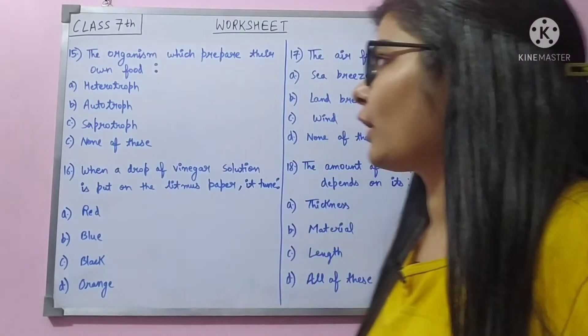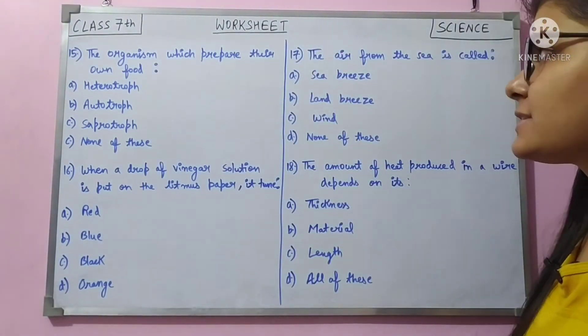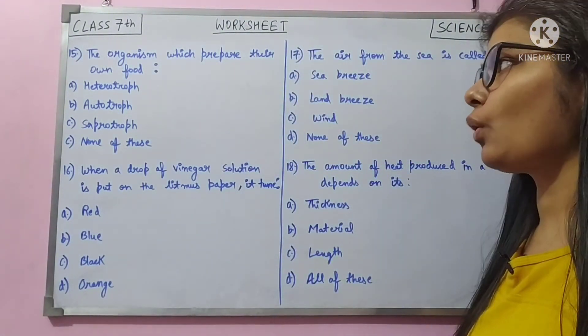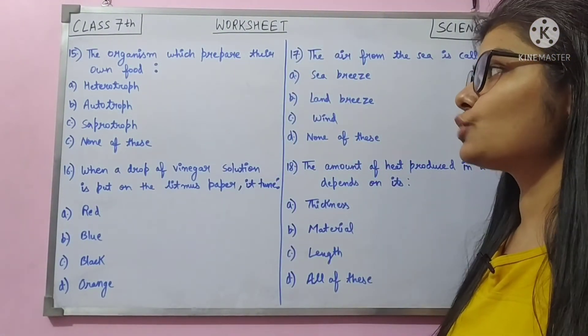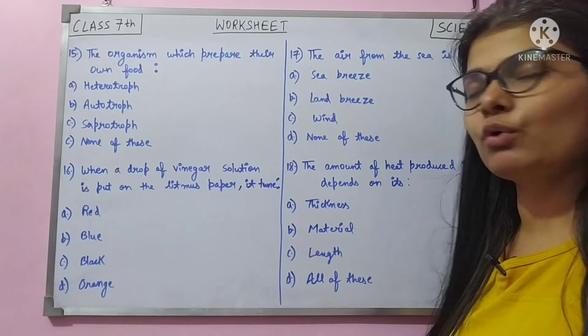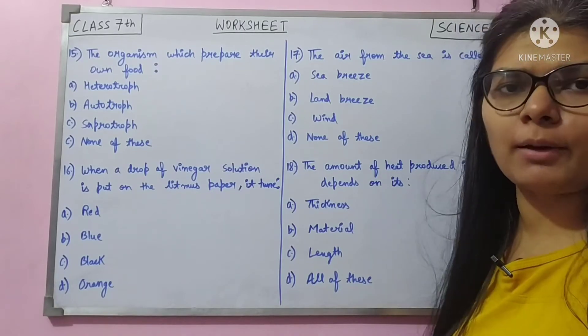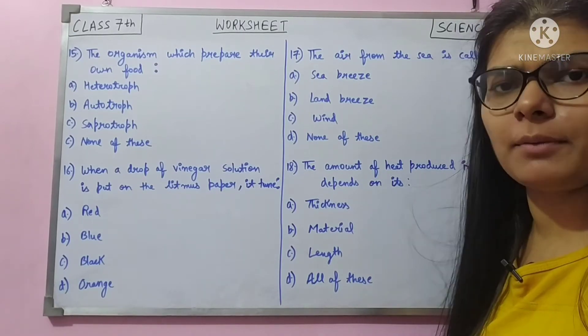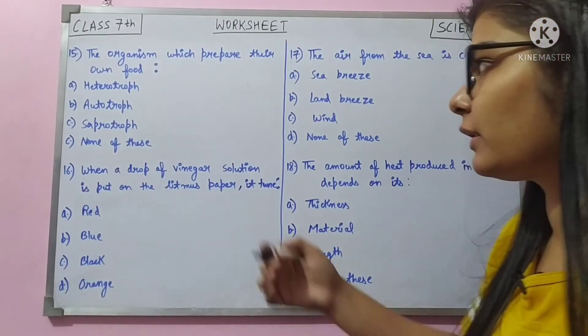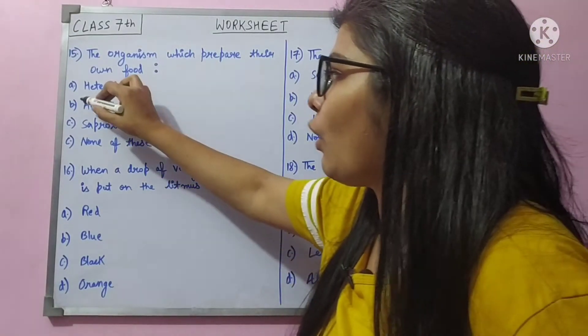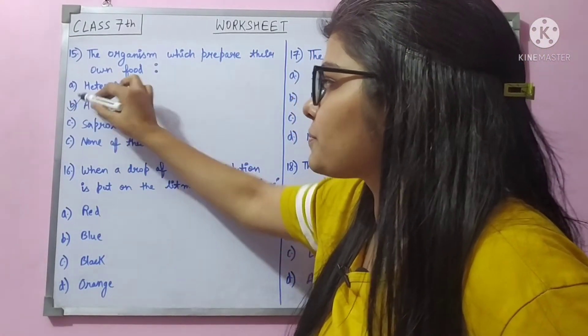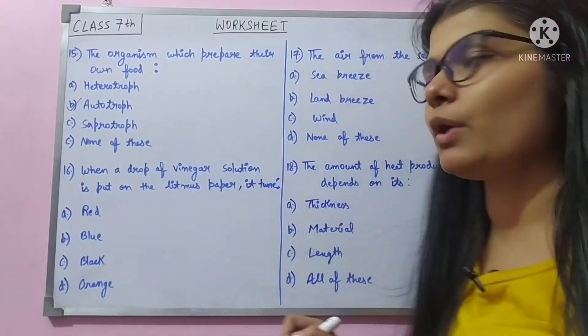Question number 15: the organism which prepares its own food — green plants do this. They are called autotrophs. Answer is B.